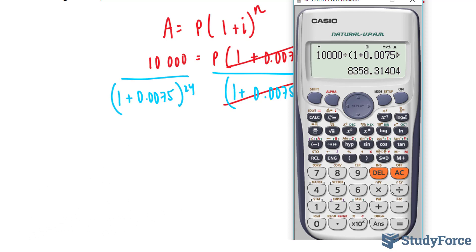Now keep in mind that if you do not have a calculator like this, you can calculate this out first and then power it to 24, write that number down on a piece of paper, then divide 10,000 from that. So our P value is 8,358.